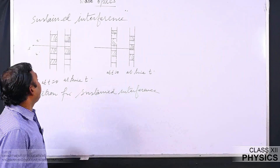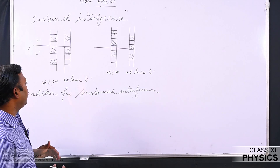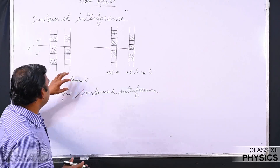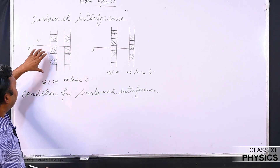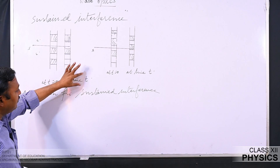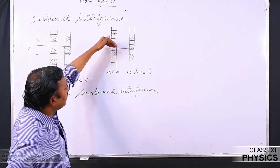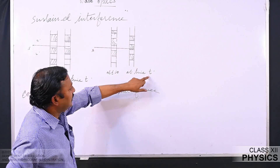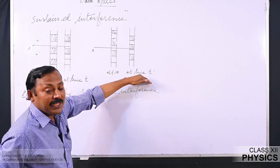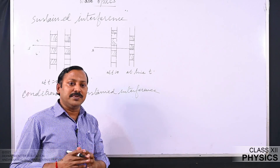Now we will see sustained interference. Interference is said to be sustained if the position of bright and dark fringes does not change with respect to time — once fringes are formed on the screen, they should not change position over time. In one case, the position of bright and dark fringes remains the same at t=0 and after time t. In another case, a central bright fringe at t=0 appears as a dark fringe after time t — that is unsustained interference.